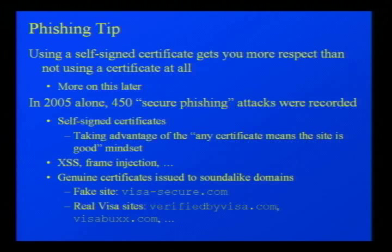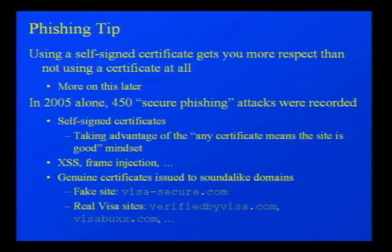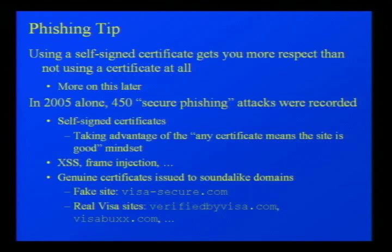Phishers are starting to realize this. Last year alone there were about 450 known secure phishing attacks. The two main approaches, apart from cross-site scripting, are using a self-signed certificate, and getting a genuine certificate for a similar-sounding domain — for example, visasecure.com. Visa uses domains like Verified by Visa and Visa Buxx, so if you see visasecure.com with a certificate issued by a trusted CA, there's no reason for a typical person not to believe it's a genuine Visa site.